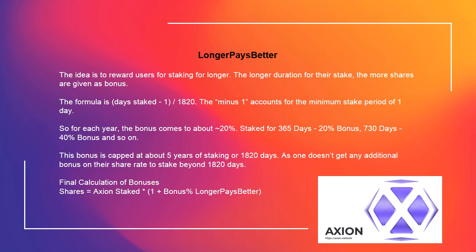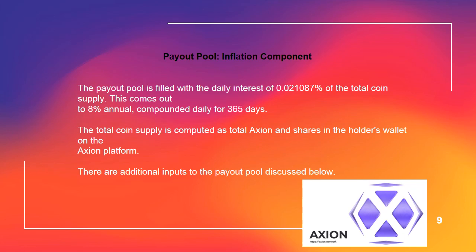This bonus is capped at about 5 years of staking, or 1820 days, as one doesn't get any additional bonus on their share rate beyond 1820 days. Final calculation: Shares equals Axion staked multiplied by (1 plus bonus percent for longer pays better). Payout pool inflation component: the payout pool is filled with the daily interest of 0.021087% of the total coin supply. This comes out to 8% annual, compounded daily for 365 days. The total coin supply is computed as total Axion and shares in the holder's wallet on the Axion platform.